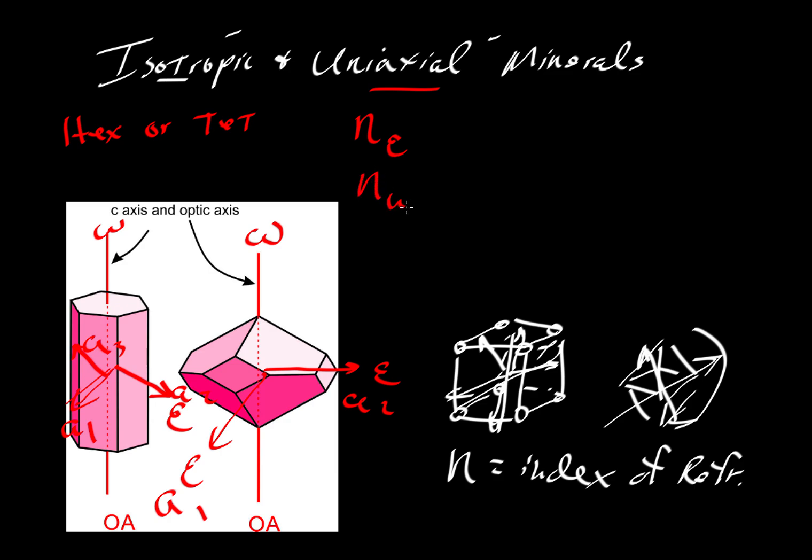And then the n omega would be indicative of the velocity as it travels along the c axis. Keep in mind, although I'm saying velocity, n is really the velocity in a vacuum divided by the velocity in the mineral. So all of these n values are inverse velocity. The larger the n, the slower the velocity. So that's what's going on in uniaxial minerals.